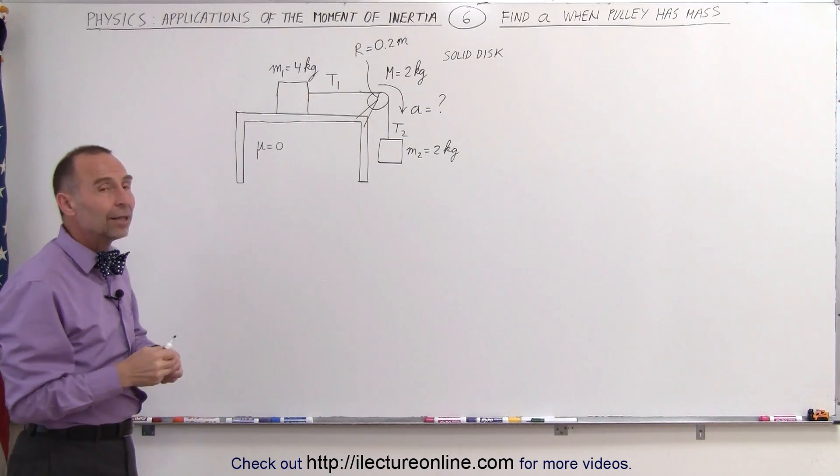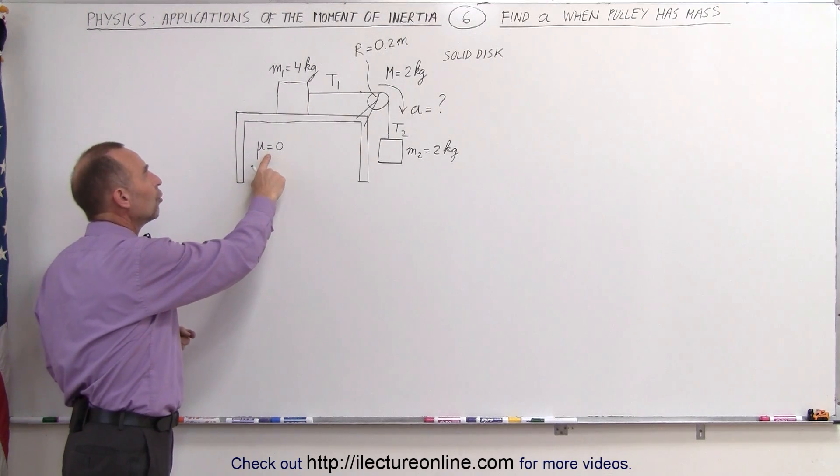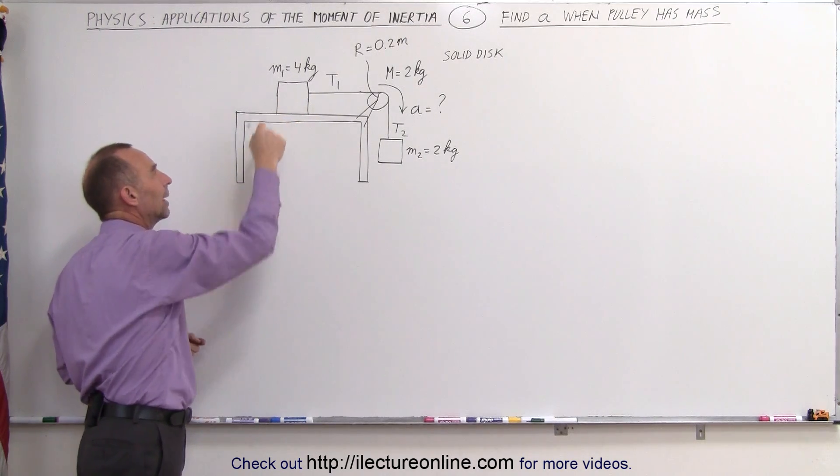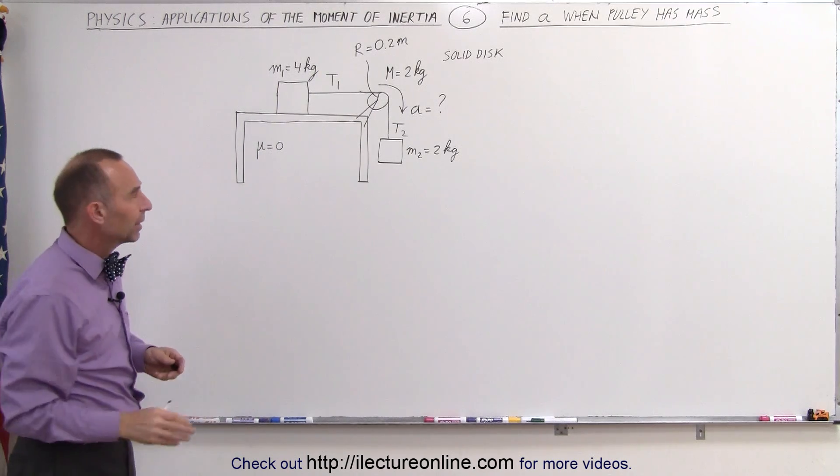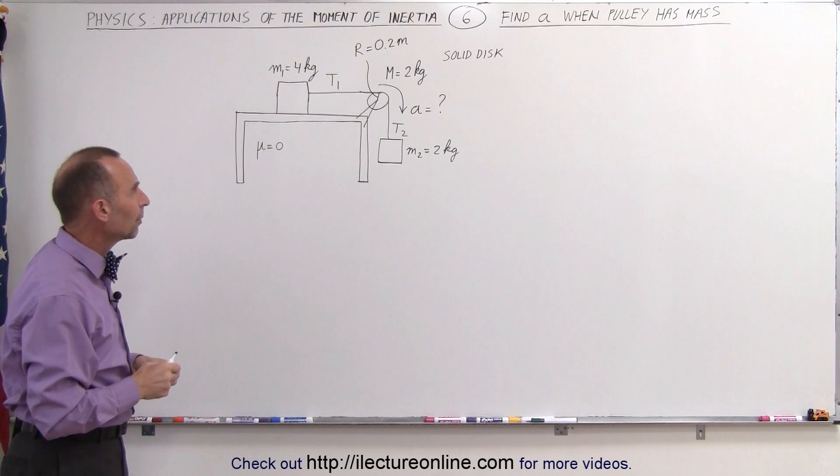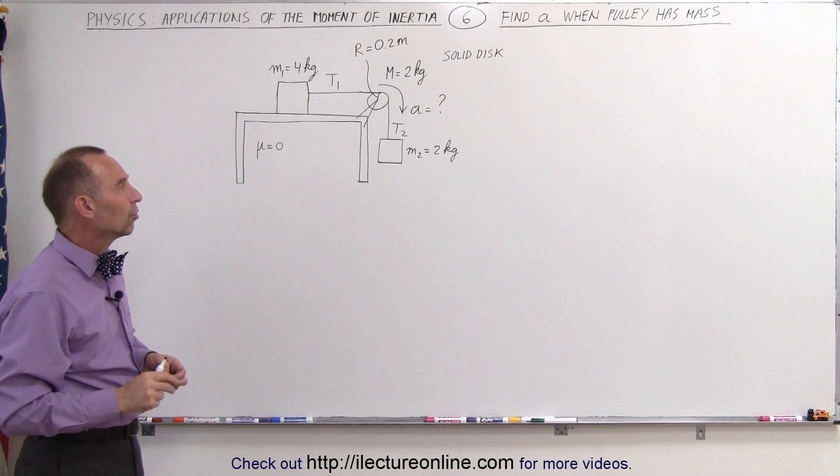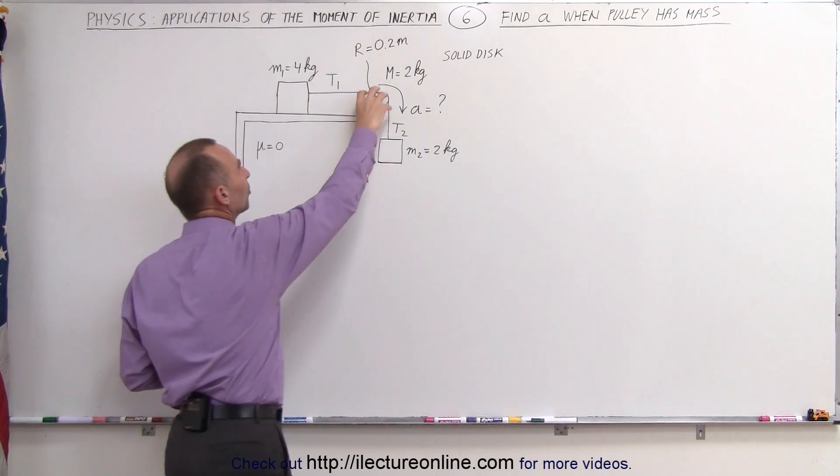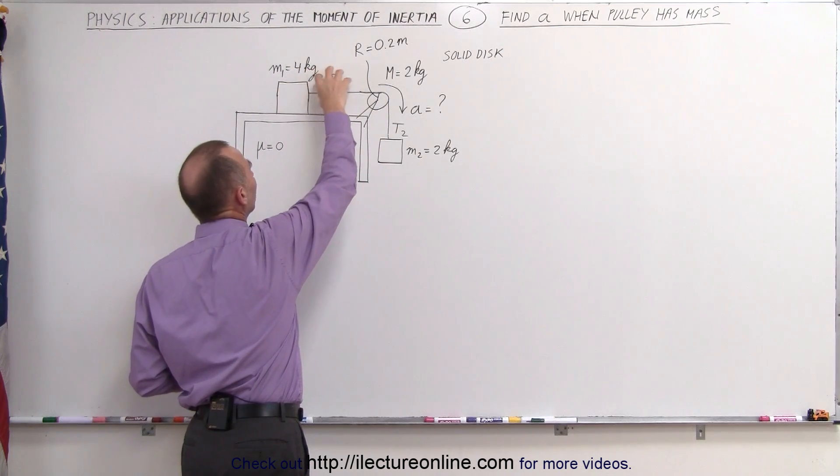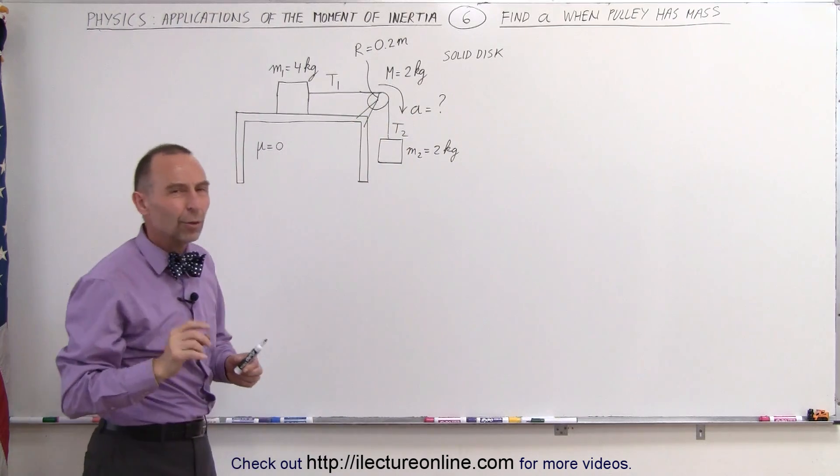What we can then say is we're going to end up with several equations. Also, quickly note that there's no friction between the block on the table and the table itself. We'll do an example later where there is friction there, but we'll start off with a little easier problem where there's no friction. We're going to end up with three equations: one related to this pulley, one related to this mass with this tension, one related to this mass and that tension.